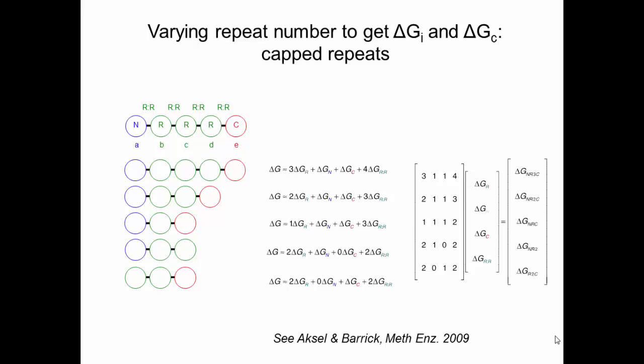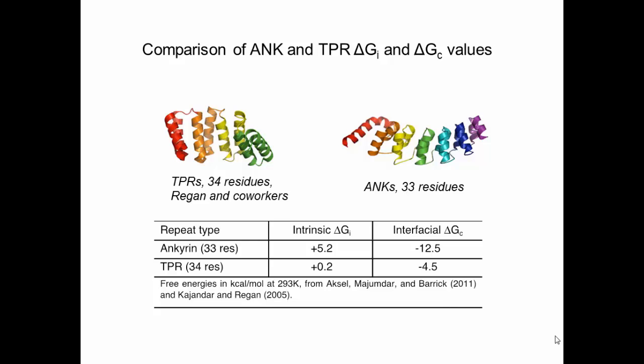Using constructs that have different repeat numbers, we can quantify the intrinsic energies and resolve them from the coupling energies. One important aspect of the work I presented is that we have used capping repeats to polarize the ends of the molecule, shown as blue and red N and C repeats, which are important to keep molecules in solution. In each of these studies we test whether molecules are soluble using analytical ultracentrifugation. With this approach, we can take measured stabilities and relate them to linear equations describing stability in terms of intrinsic and interfacial interactions and quantify them. We have done that, and the results for one type of repeat — the consensus ankyrin domain using identical repeats — are shown here.